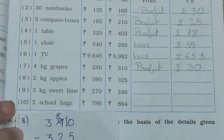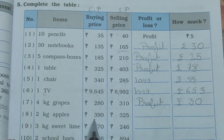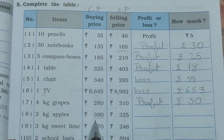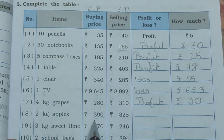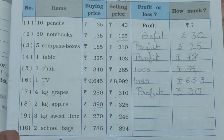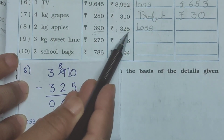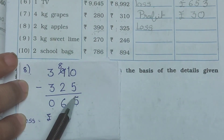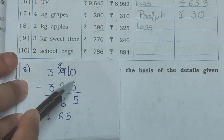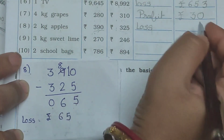Now see the 8th one. Item is 2 kg apples. Buying price, Cp, is Rs.390. Selling price, Sp, is Rs.325. Sp is smaller than Cp — Cp is greater. So we get the loss. Loss is equal to Cp minus Sp. Write down loss. 390 minus 325: 0 minus 5 not possible, borrow from 9 — becomes 8 and 10. 10 minus 5 = 5. 8 minus 2 = 6. 3 minus 3 = 0. So Rs.65 of loss. Write down Rs.65.